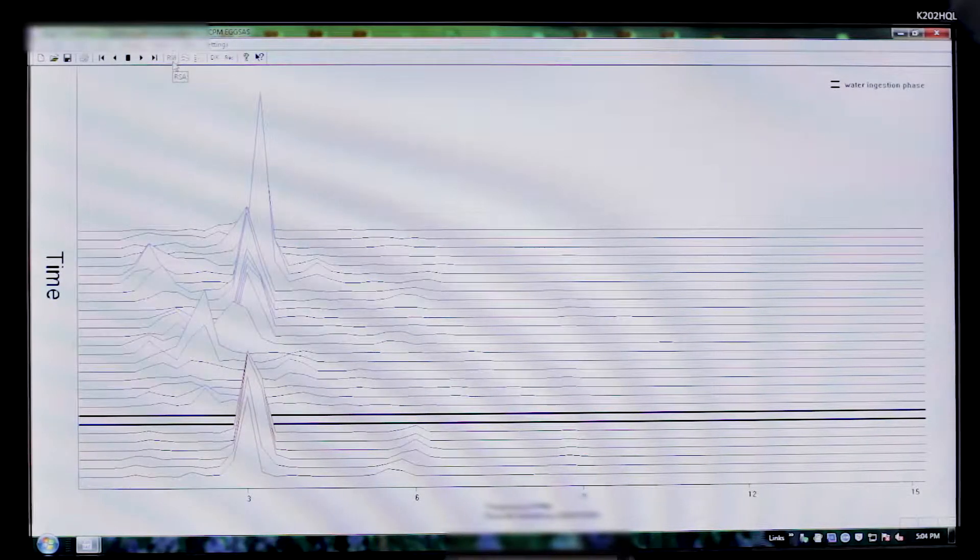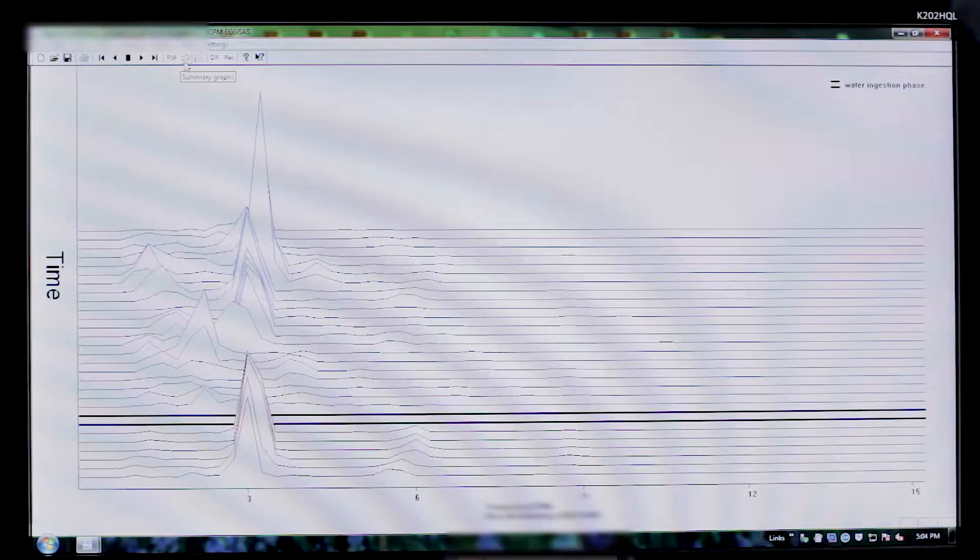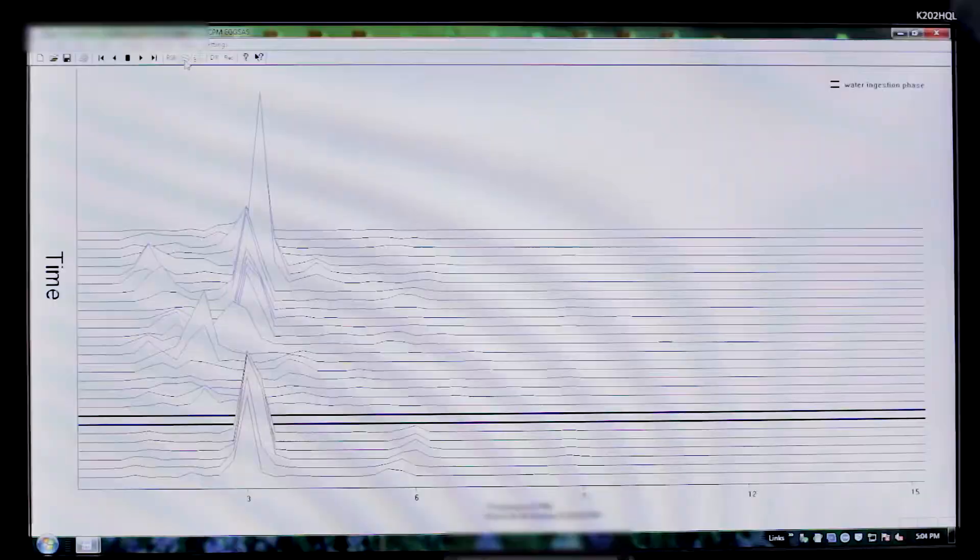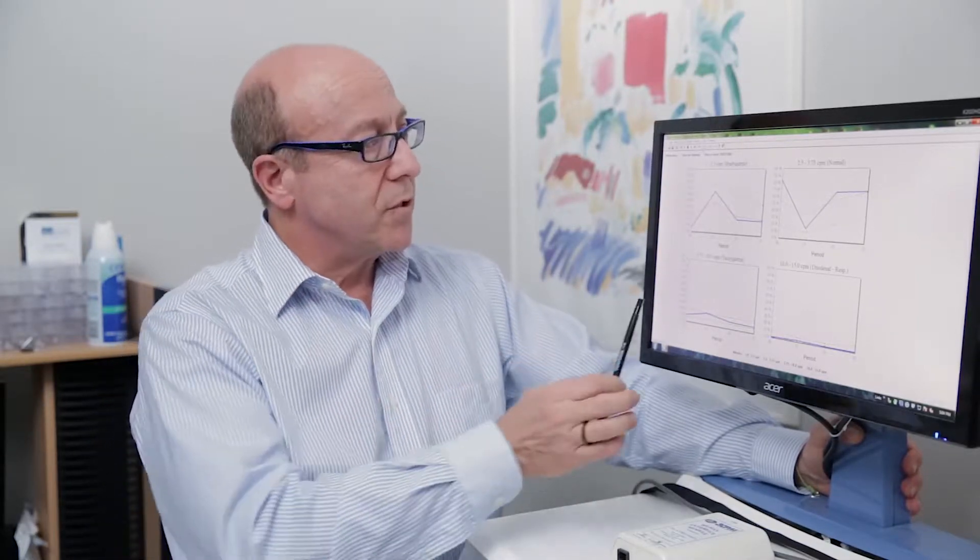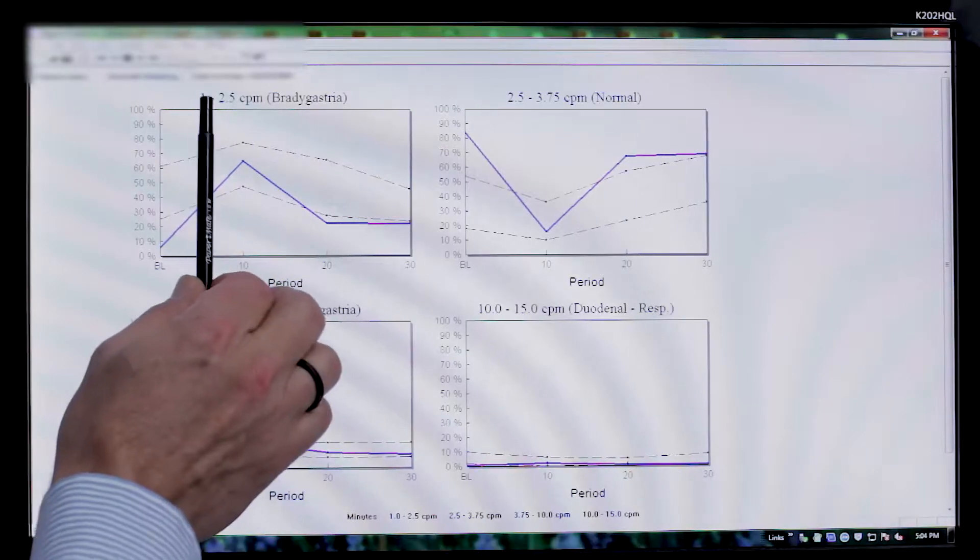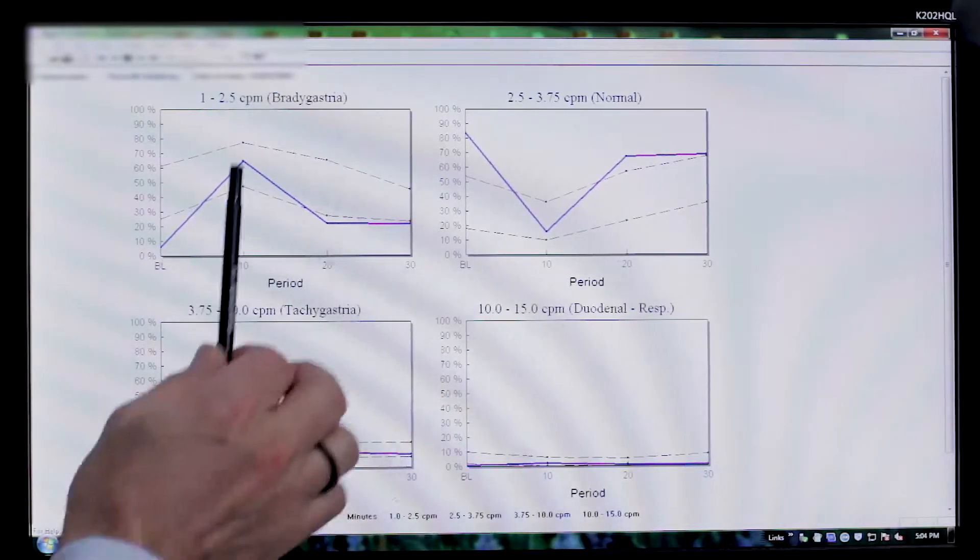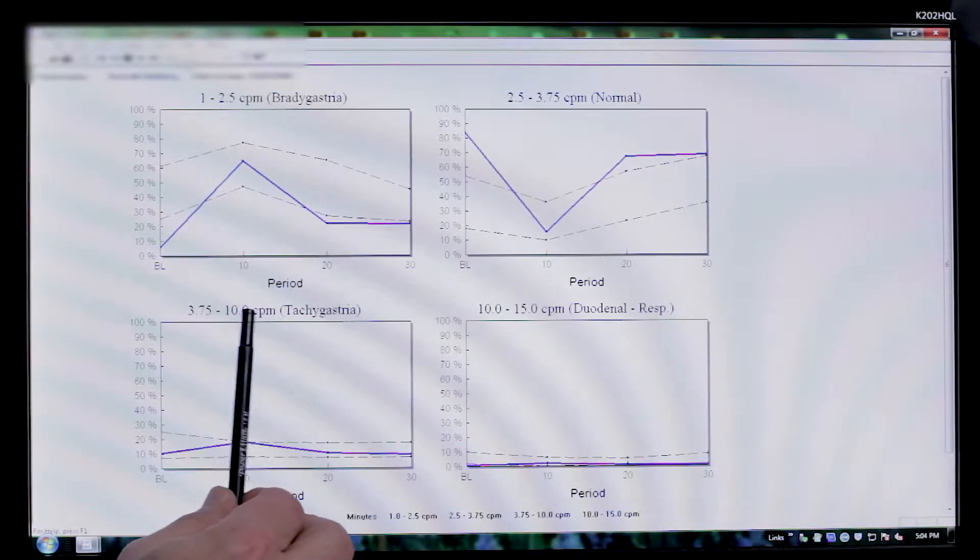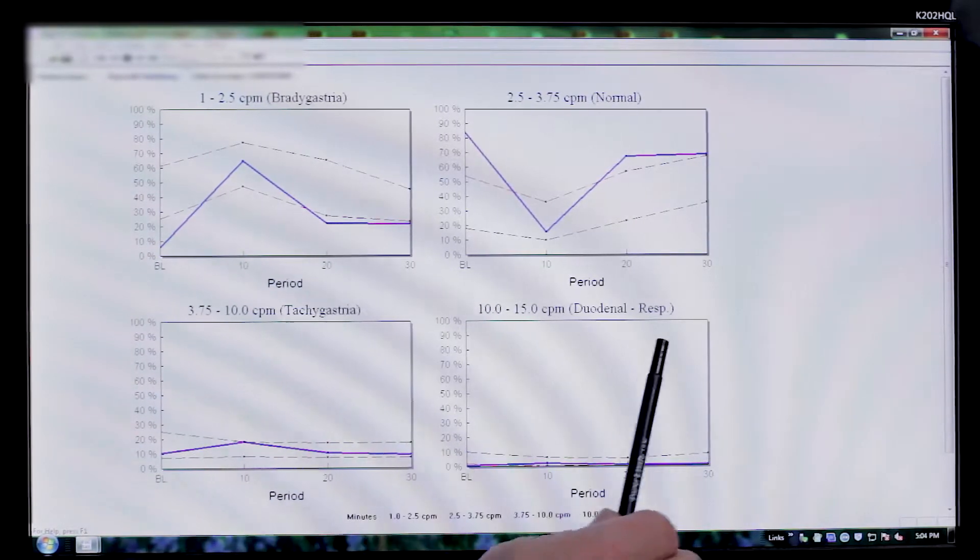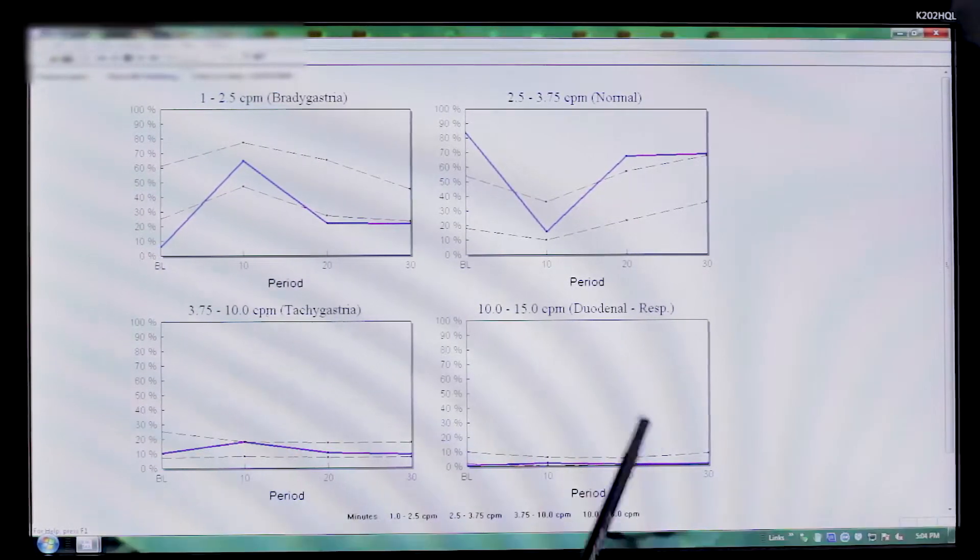The RSA is the running spectral analysis. The summary graphs is demarcated by this blue and red depiction. It will give me three summary graphs based upon isolated frequencies. So the Brady-Gastria frequency of 1 to 2.5 is in this box. The TACI frequency, 3.75 to 10, is here. Duodenal respiratory is 10 to 15. And then normal, three-cycle per minute activity, is 2.5 to 3.75.